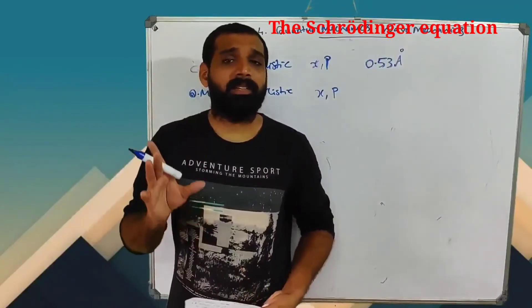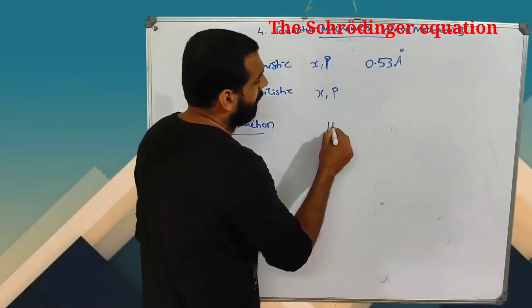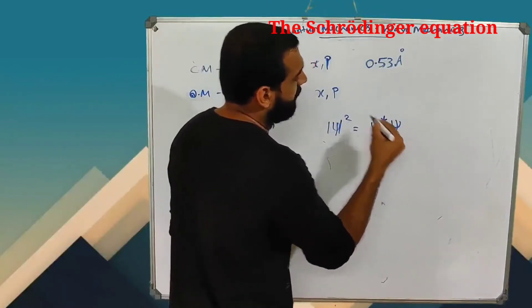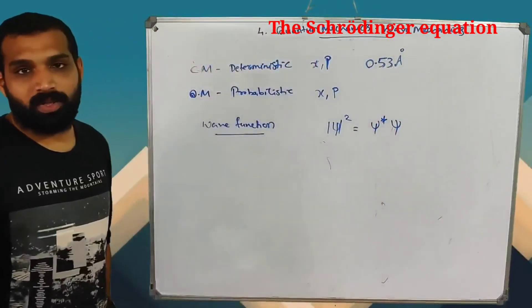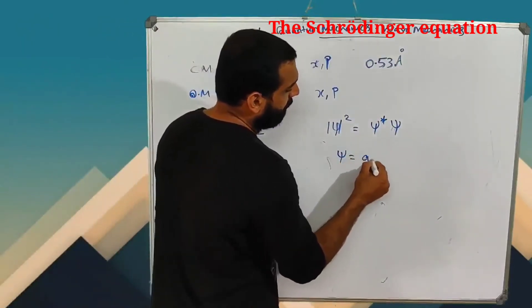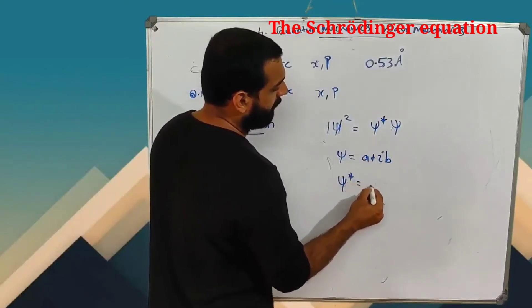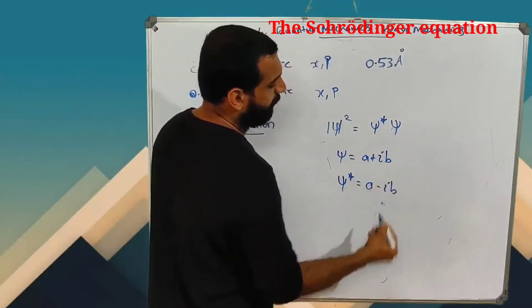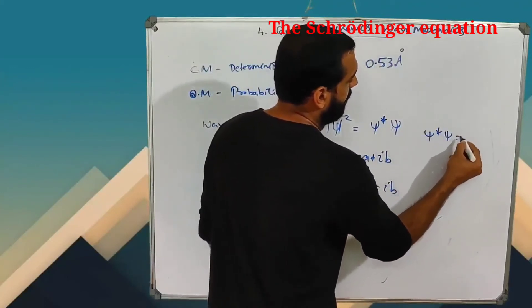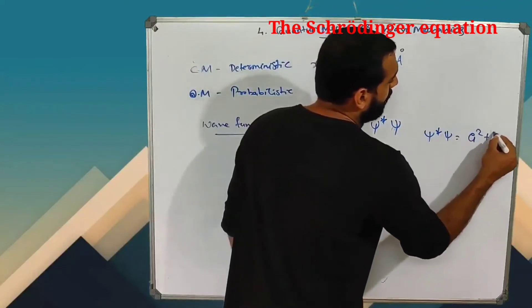Now I will define the physical reasoning: probability density. The wave function ψ is complex. The complex conjugate of (a + ib) is (a − ib). So ψ* × ψ gives a² + b², which is always positive. A and b can be negative or positive, but ψ*ψ is always positive — that's the probability density.